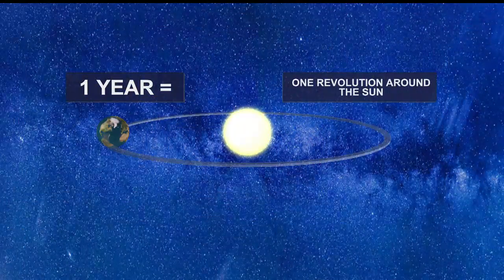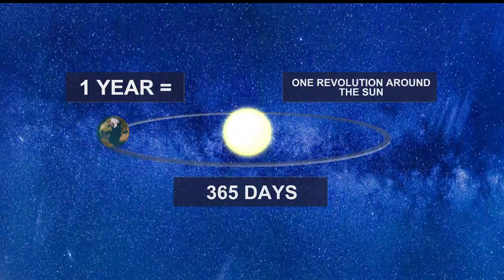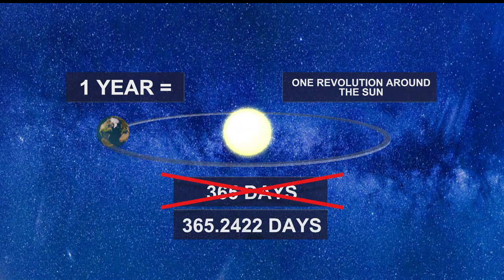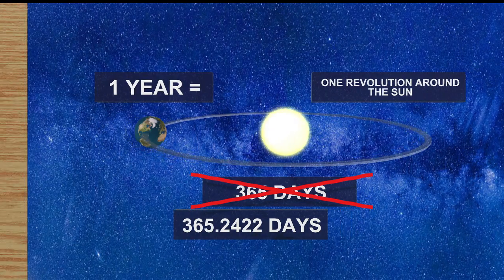So what exactly is a year? It's one revolution of the Earth around the Sun. It's 365 days, right? Not quite — it's a little bit more than that. It's 365.2422 days.